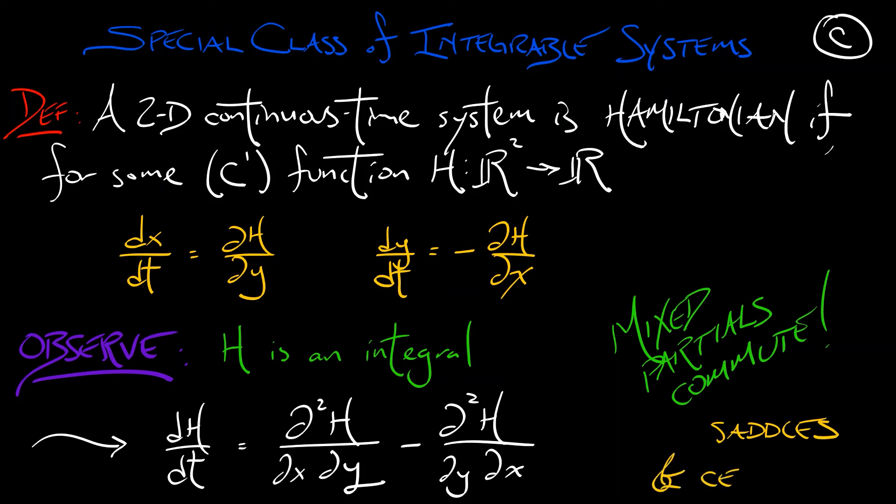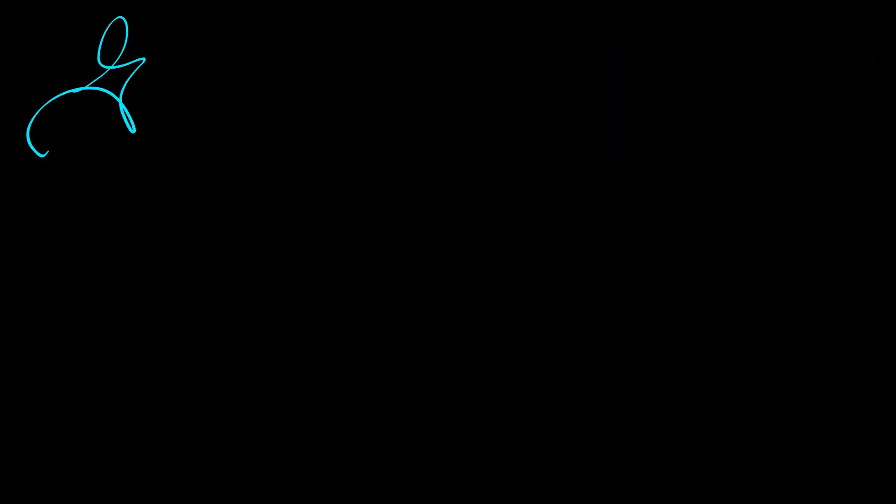h is an integral. And that means that in such a Hamiltonian system, you're going to see saddles and centers and that's it. So now everything just boils down to figuring out whether a system is Hamiltonian or not. Not every integrable system is Hamiltonian, but all Hamiltonian systems are integrable. And the good news is that if you're working in continuous time on the plane, then we can answer these questions.